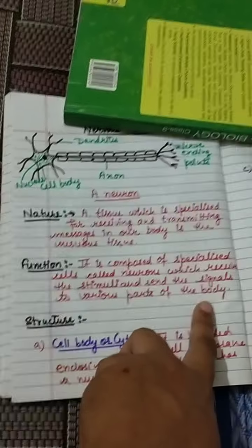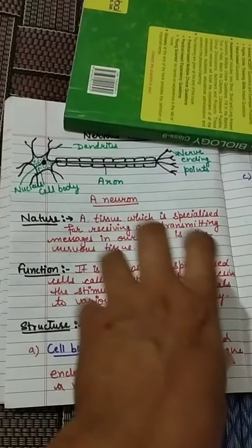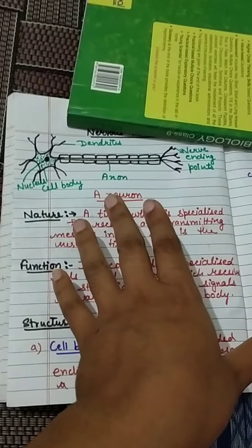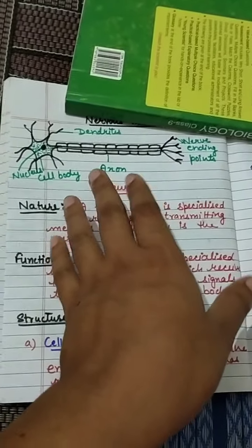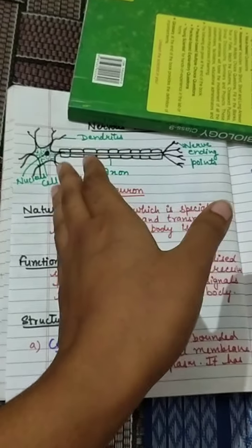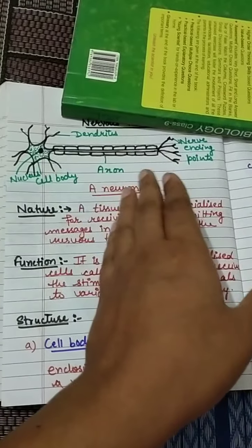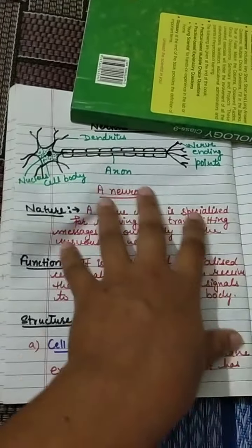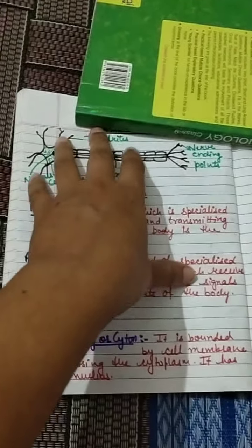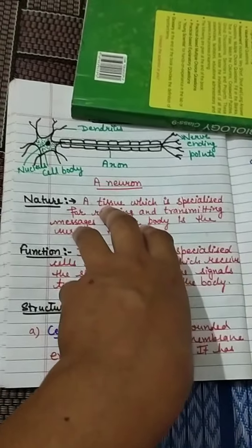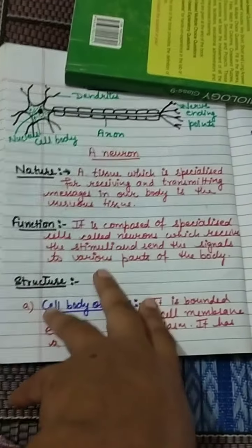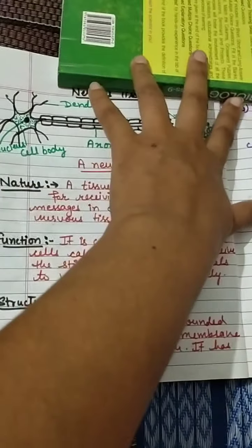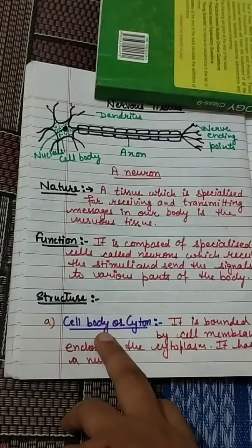Nervous tissue is composed of specialized cells called neurons which receive stimuli and send signals to various parts of the body. For example, when we touch a hot object, we receive the stimulus through sensory neurons, which transfer the message to the brain. The brain then sends the message to the motor nerves, and our body gets the signal to withdraw the hand from the hot object — all within a fraction of a second.